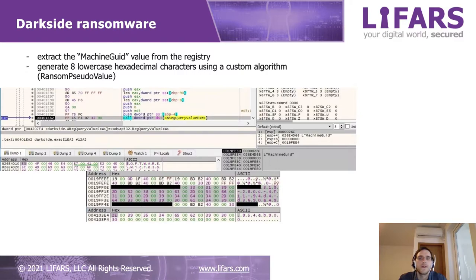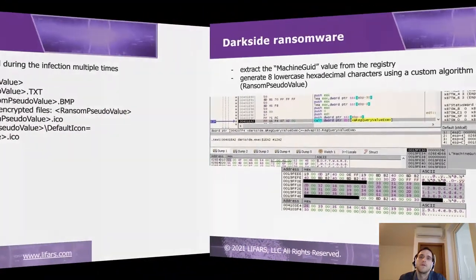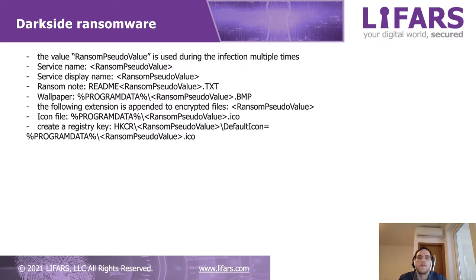The ransomware will extract the machine ID from the registry, and based on that it will generate 8 lowercase hexadecimal characters using a custom algorithm. I call this value RansomSeldoValue, which in our case is 954EB900. This value is used in multiple places such as the service name, service display name, ransom note, and so on.